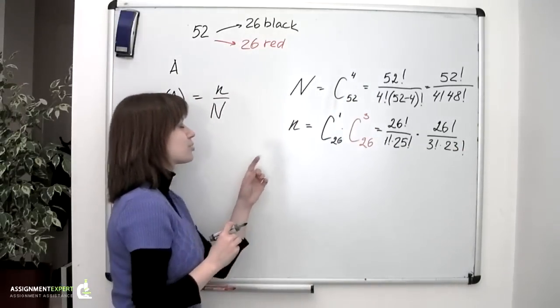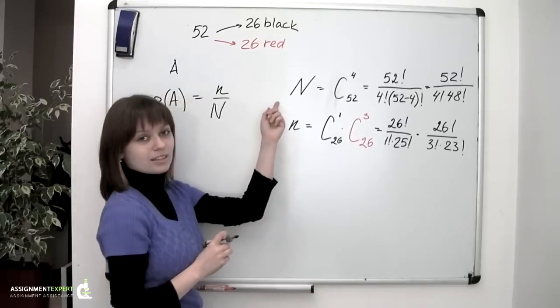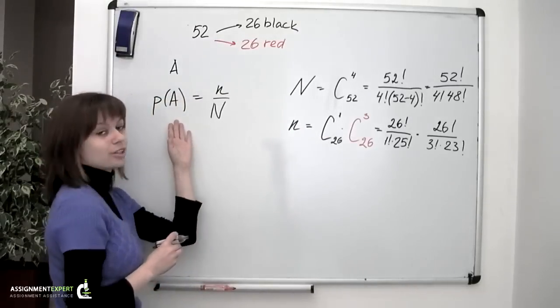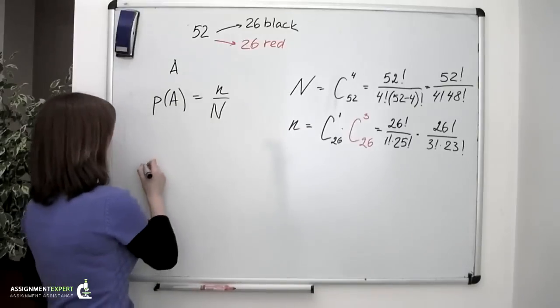We now have the expressions for the small n and the capital N, and we can substitute them into the formula of the probability.